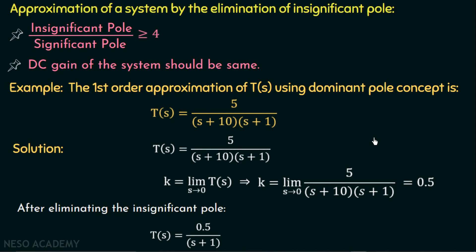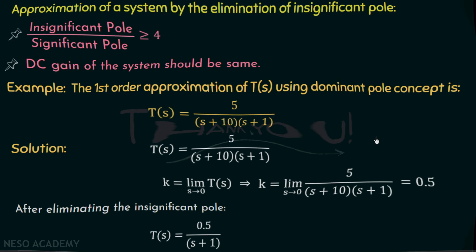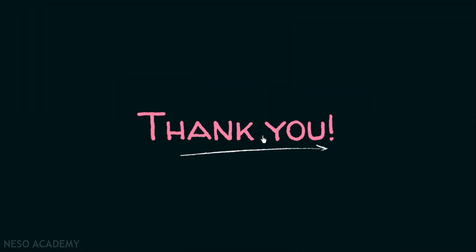In this way, we can use the concept of dominant pole to eliminate the insignificant pole and approximate the transfer function. We will discuss more problems based on the dominant pole concept in upcoming lectures. I will end this lecture here. See you in the next one.